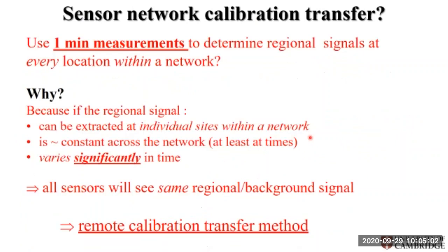This is a brief outline of what we are trying to do with the sensor network calibration method. We are going to be utilizing one-minute measurements to determine the regional signal, as we've shown from the previous example. The key concept is that if the regional signal can be extracted at individual sites within the network, these signals should be constant across the whole network in most cases and should vary significantly in time. We need species that have a detectable background — essentially all sensors should see the same regional background signal. If you have an uncalibrated network, any deviation between this background will be due to differences in sensitivities and calibration parameters, and that is what we are exploiting in the remote calibration transfer method.